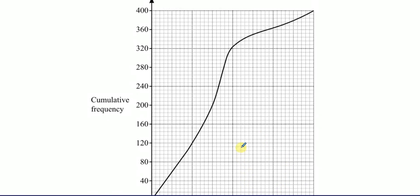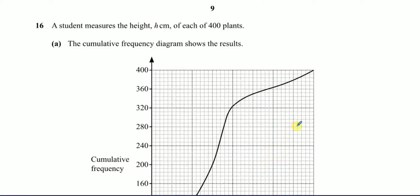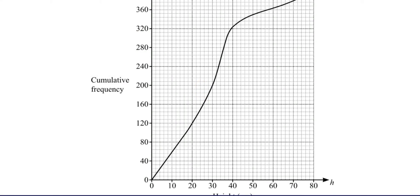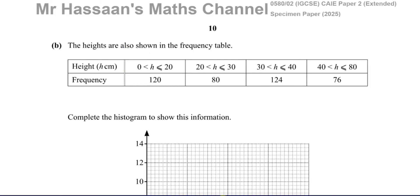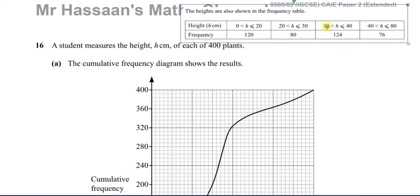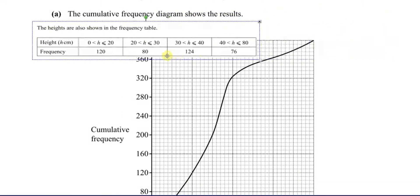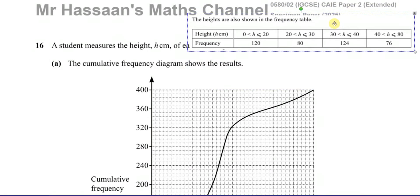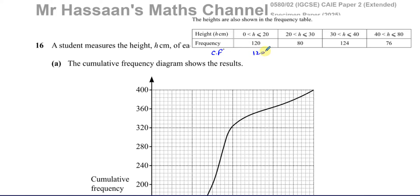The cumulative frequency is basically the sum of all the frequencies. We can understand that by looking at the actual table, which is in part B. I'm just explaining how a cumulative frequency curve is made. You have your frequency table and you make the cumulative frequency table by adding together the frequencies as you go along. Between 0 and 20 the frequency is 120, so the cumulative frequency would be 120.